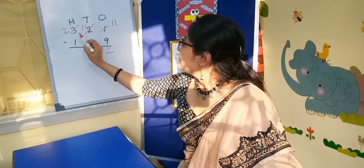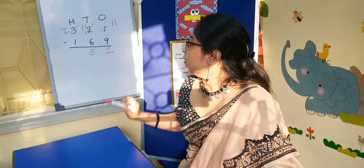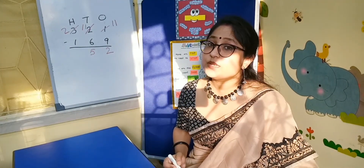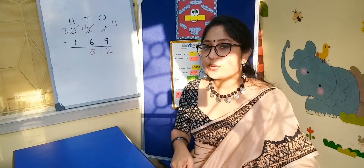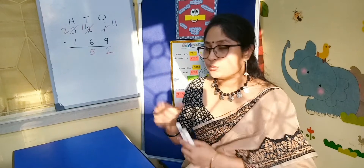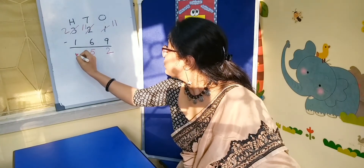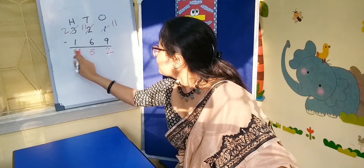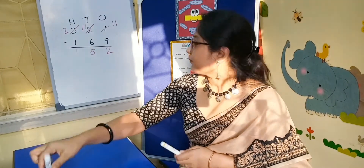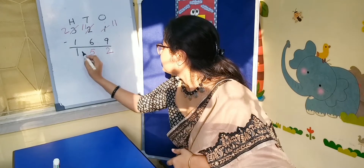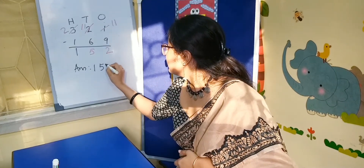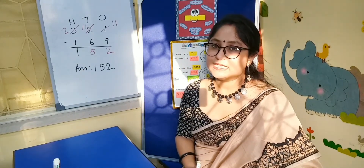And now in the hundreds column, here is 2 and on the floor here is 1. 2 is bigger than 1, so now you can subtract 1 from 2: 1, 2 — that is 1. You have to write the answer 152.